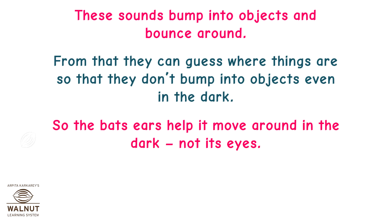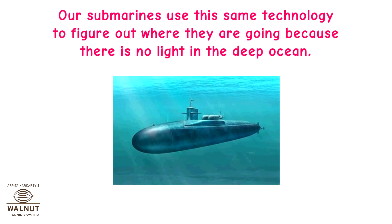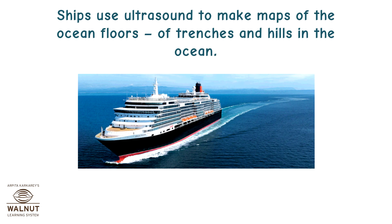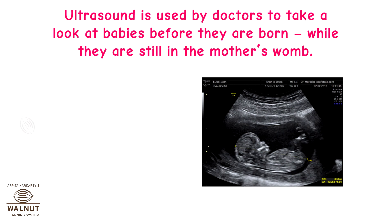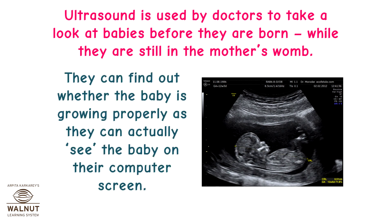The bat's ears help it move around in the dark, not its eyes. Our submarines use this same technology to figure out where they are going, because there is no light in the deep ocean. Ships use ultrasound to make maps of the ocean floors, of trenches and hills in the ocean. Ultrasound is used by doctors to take a look at babies before they are born while they are still in the mother's womb. They can find out whether the baby is growing properly, as they can actually see the baby on their computer screen.